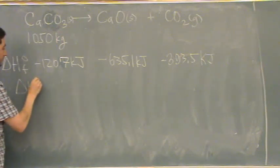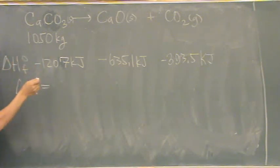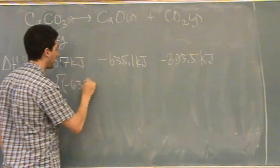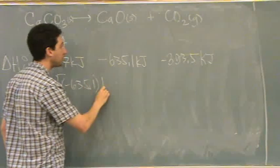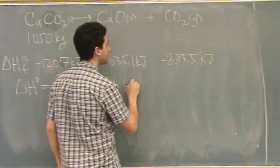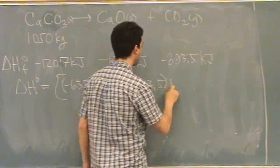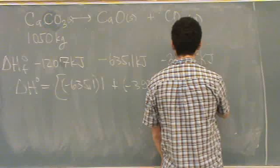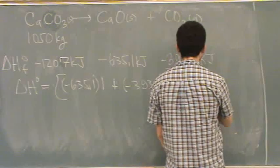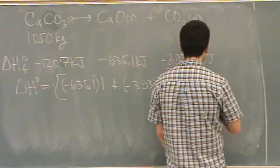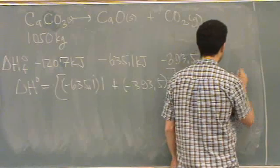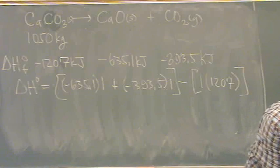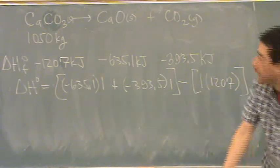Delta H reaction is the products minus the reactants. So let's go products: minus 635.1, there's only one of them, plus negative 393.5, there's only one of them. Closed brackets, minus the reactants. There's only one reactant really, it's one of them, and it's 1207. There we go. Whatever that equals should be positive 178.